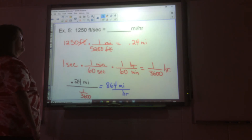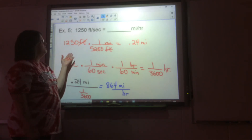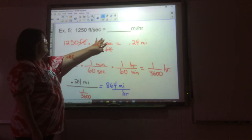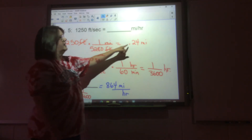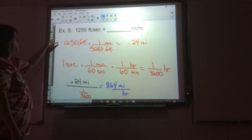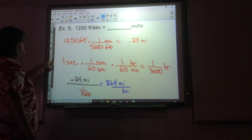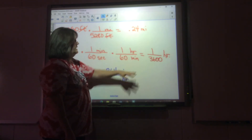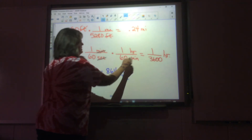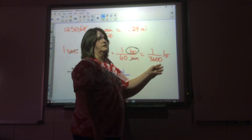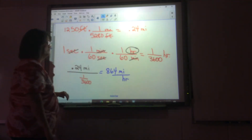Now we're going from 1,250 feet per second to miles per hour. Change feet to miles first: 1,250 feet — you know there are 5,280 feet in a mile, so use that conversion factor. Put that in the calculator and you get 0.24 miles. Then change seconds to hours: one second, one minute per 60 seconds, one hour per 60 minutes — these cancel like they should and you end up with hours. It's easier to leave this as the fraction 1 over 3,600.